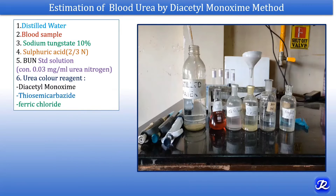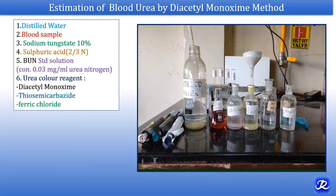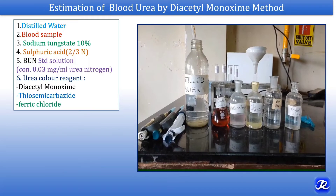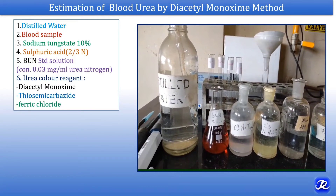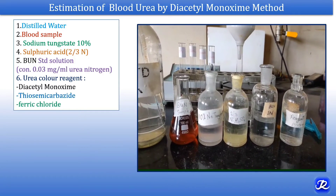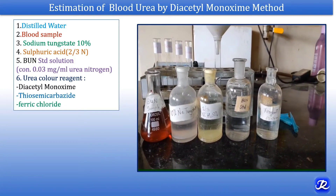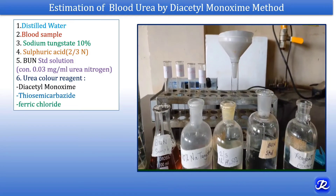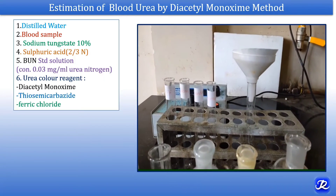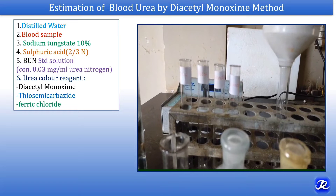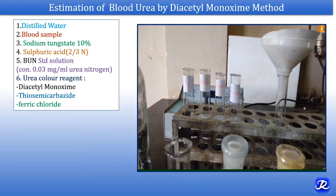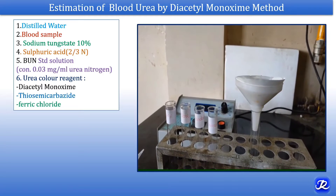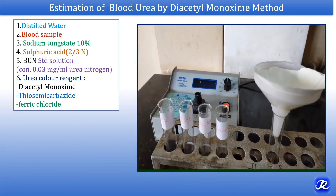For estimation of blood urea by diacetylmonoxime method, we require distilled water, blood sample, sodium tungstate, sulfuric acid, BUN standard solution of concentration 0.03 mg per ml, and urea color reagent which contains diacetylmonoxime, thiosemicarbazide, and ferric chloride. We require test tubes — blank, standard, unknown — and one for preparation of protein-free filtrate. Additionally, we require filter paper, funnel, and colorimeter.